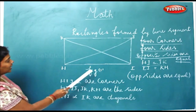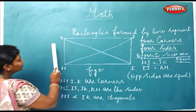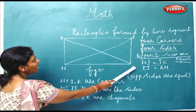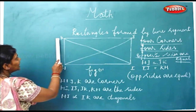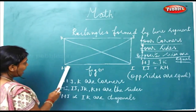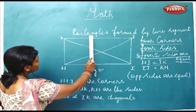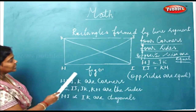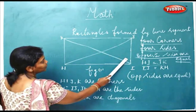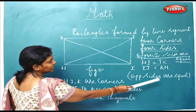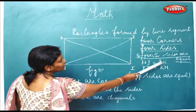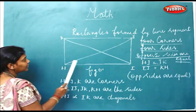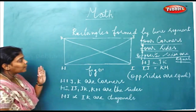Now look at this figure. I have written H, I, J, K for the corners. H-I, I-J, J-K, K-H are the sides. H-J and K-I are the diagonals. So you can see the opposite sides are equal: HI is equal to JK, and IJ is equal to KH. It also has 4 corners and 4 sides but the opposite sides are equal.